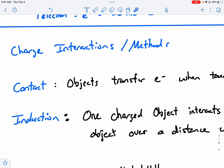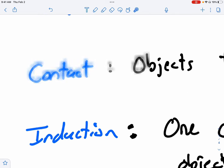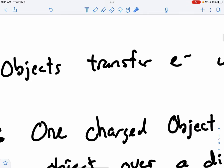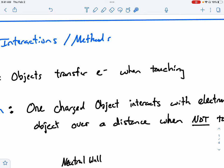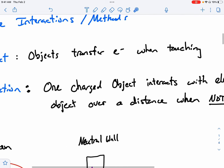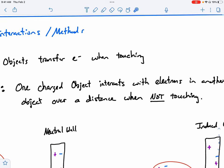charge wants to seek a balance between two objects if they are different. And so objects can transfer their charge. That can happen through direct contact where objects transfer electrons when touching. It could be through grounding. It could be through actual physical touching or induction. And this is the thing I want to focus on a little bit in this video.